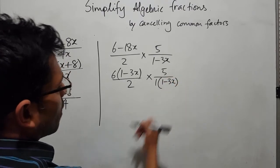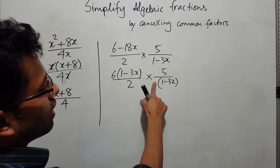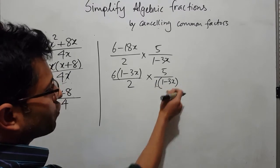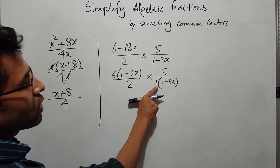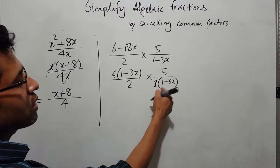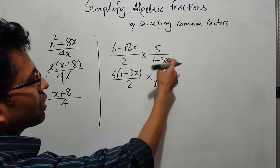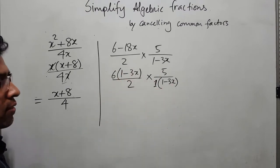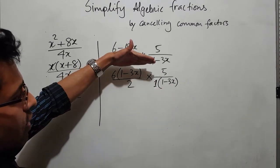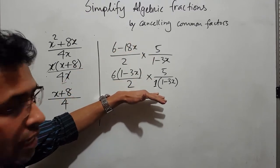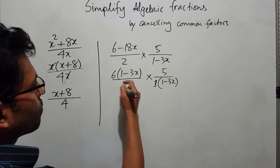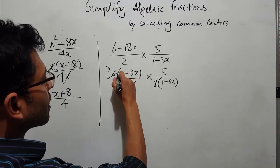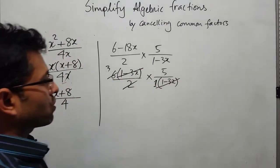For the factor (1 minus 3x), we can write 1 times (1 minus 3x) to make the times relation explicit — without a times relation you can't do cancellations. Now with everything in times relation, anything from the numerator can be cancelled with the denominator. You can see 6 and 2 simplify to 3, and (1 minus 3x) in the numerator cancels with (1 minus 3x) in the denominator.